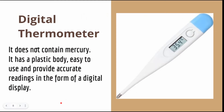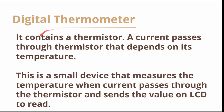Now let us see the digital thermometer. It does not contain mercury and has a plastic body. It is easy to use and provides accurate readings in the form of a digital display. It contains a thermistor — a small device that measures temperature when current passes through it and sends the value to an LCD screen.